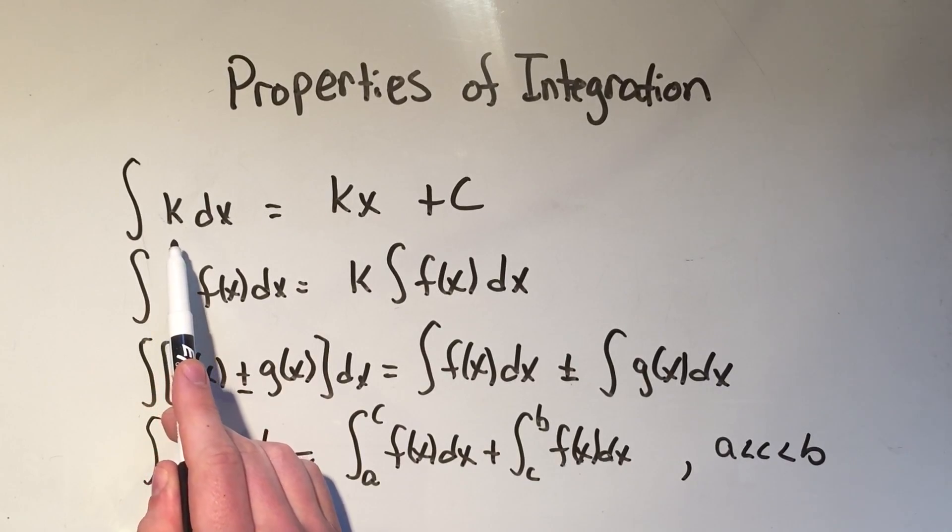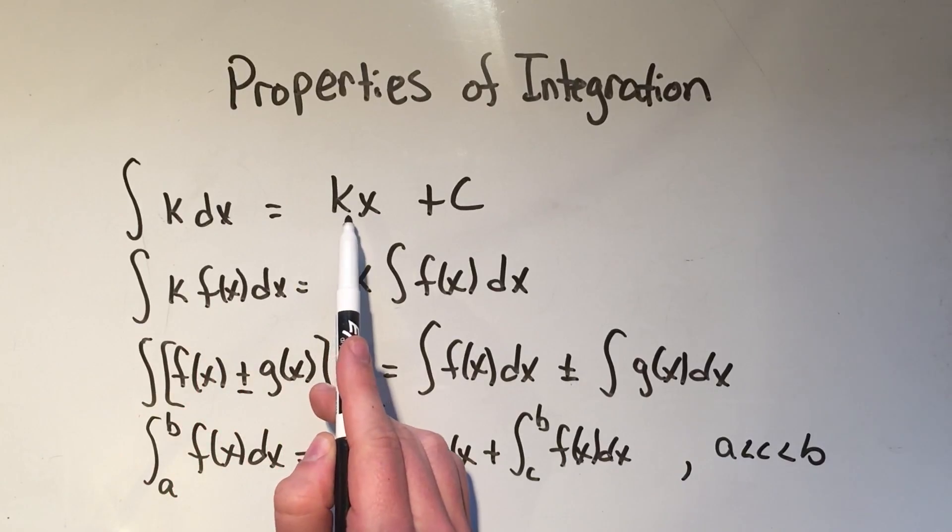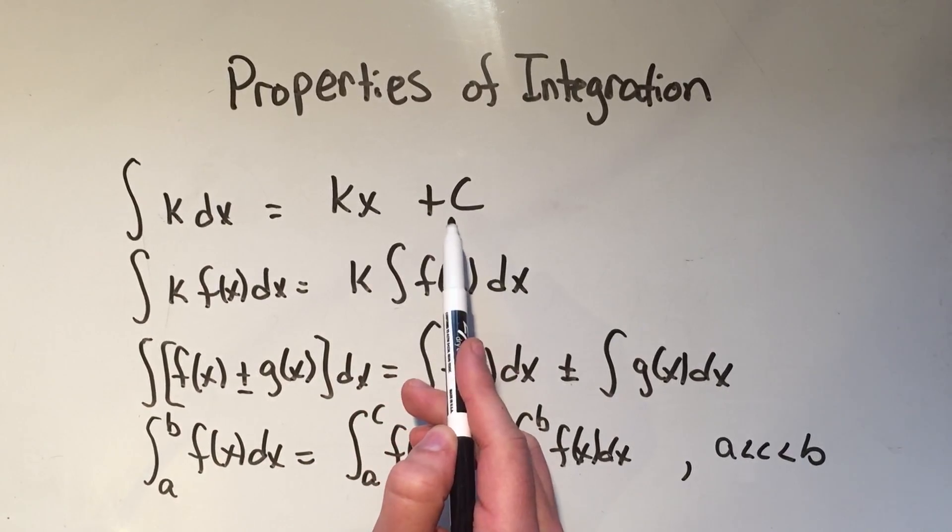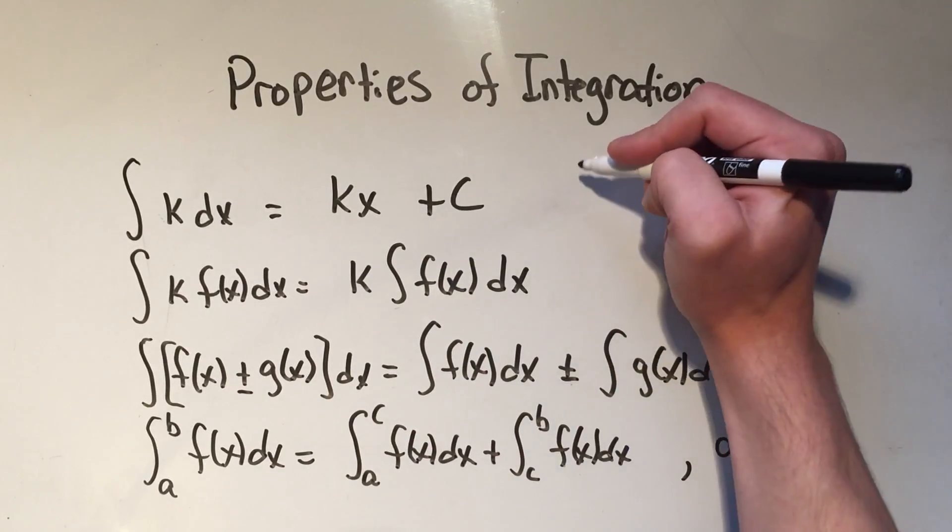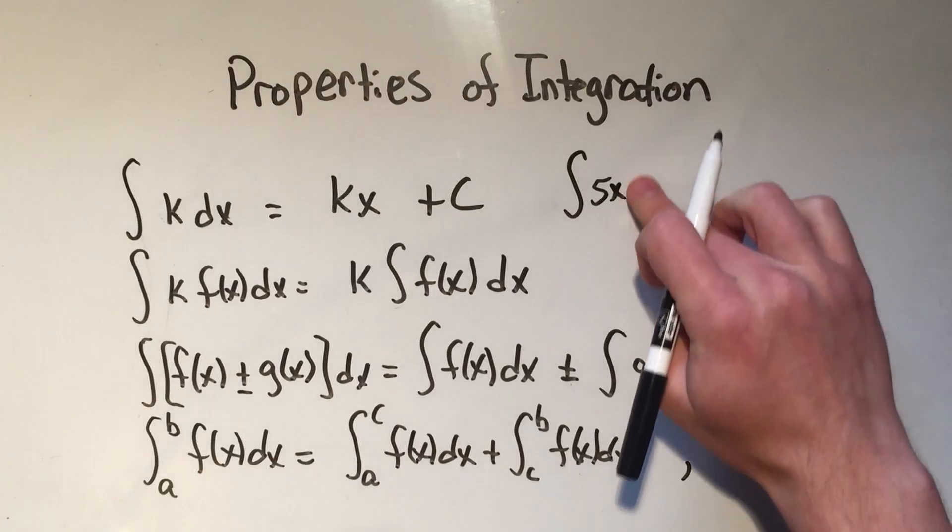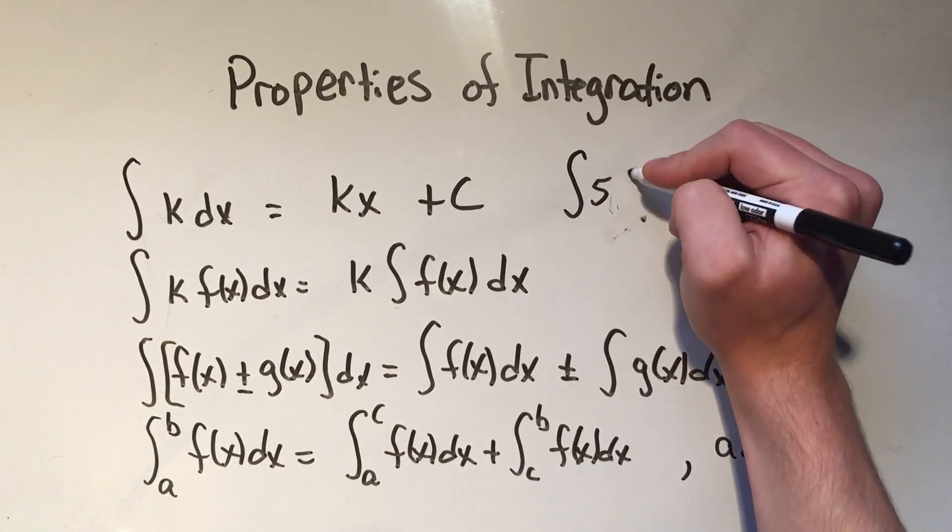If k is a constant, like 5, then the integral of a constant dx is that constant times x, plus another constant if you're doing an indefinite integral. So for example, if I have the integral of 5 dx,